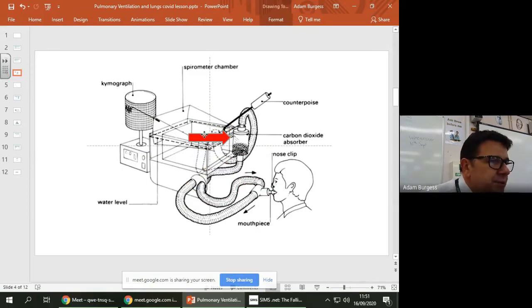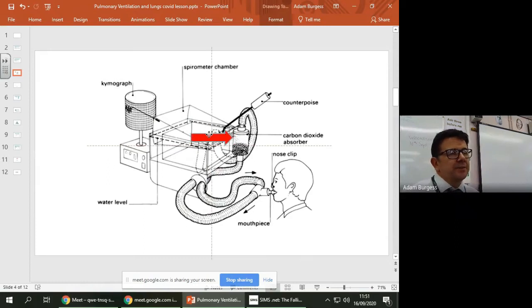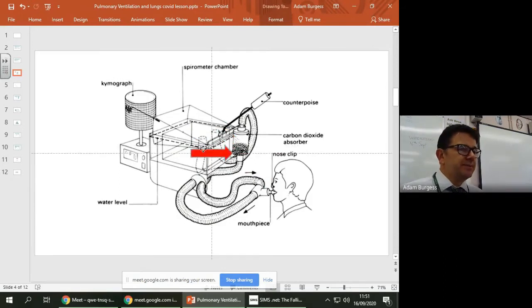it goes through a carbon dioxide absorber. The reason being is when you're breathing out, you are releasing lots of carbon dioxide. The last thing you want to do when you breathe in a sealed system is to breathe in your own carbon dioxide because it will reduce the oxygen levels in your body. So it goes through a carbon dioxide absorber, so something like sodium hydrogen carbonate will soak up the carbon dioxide.